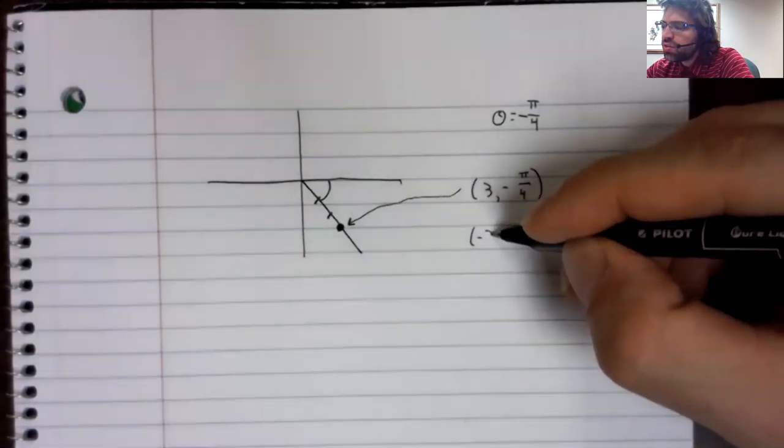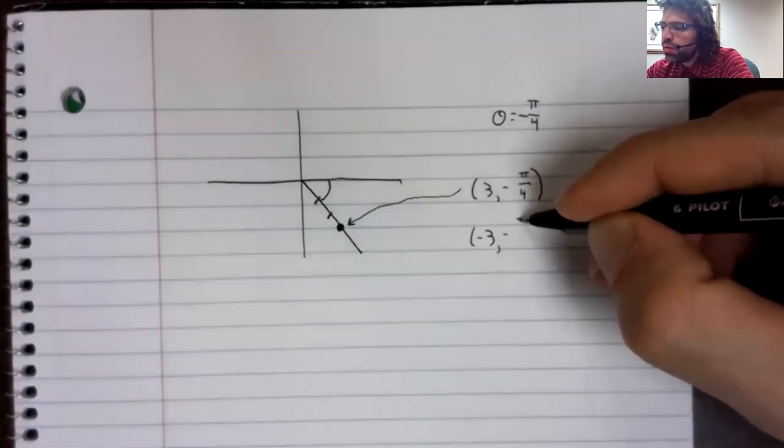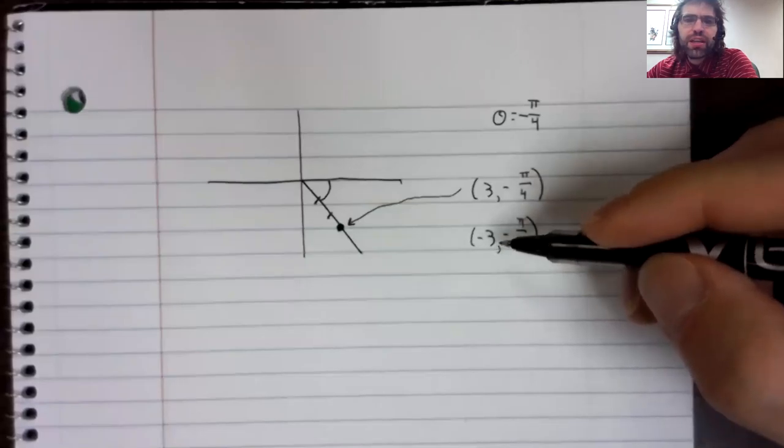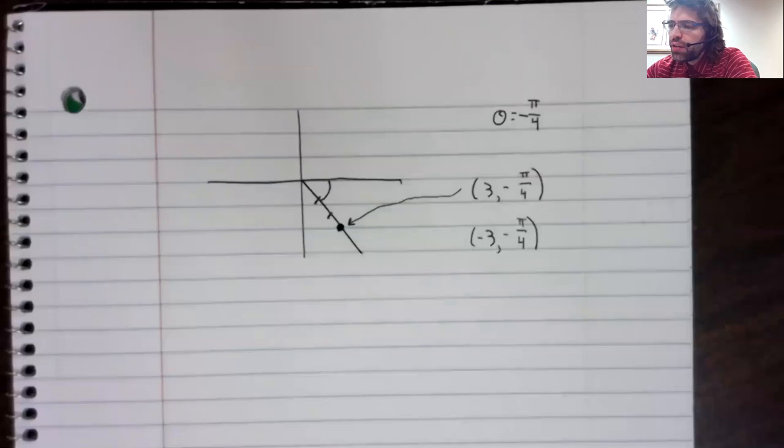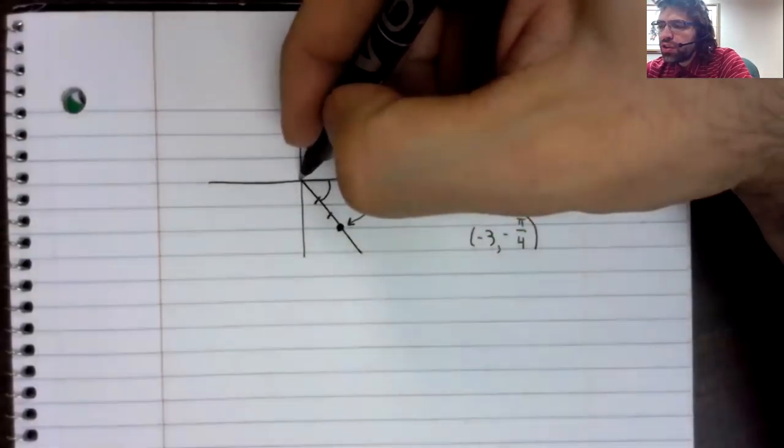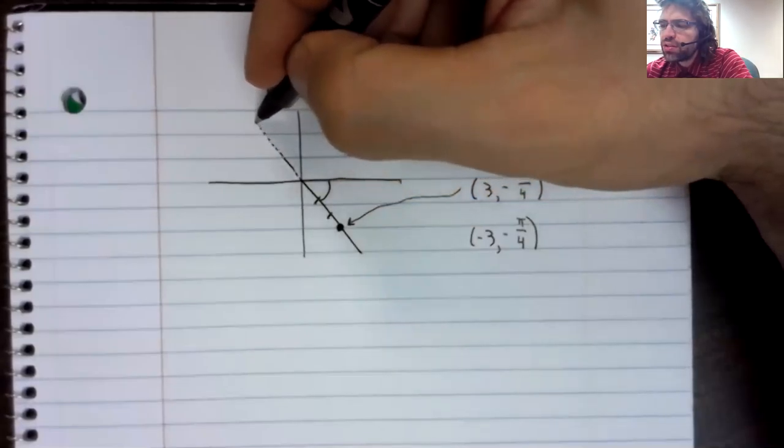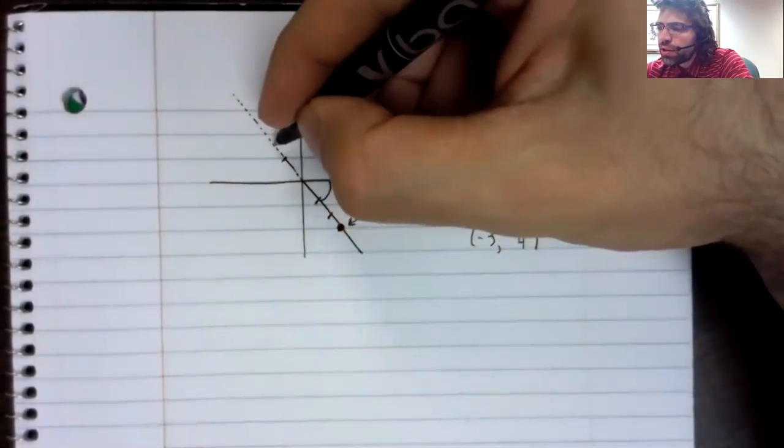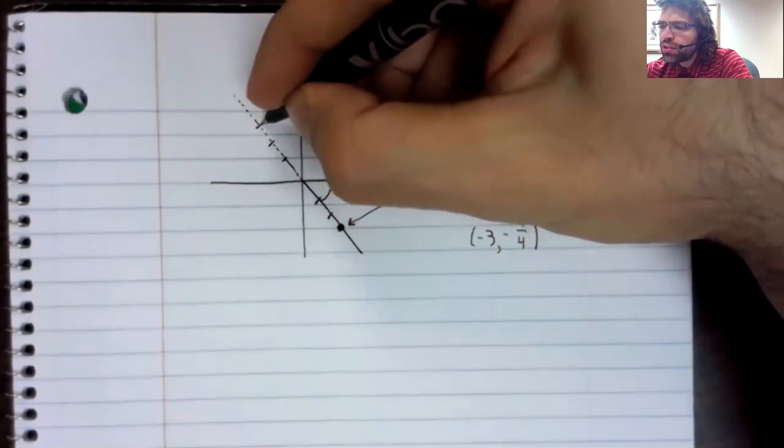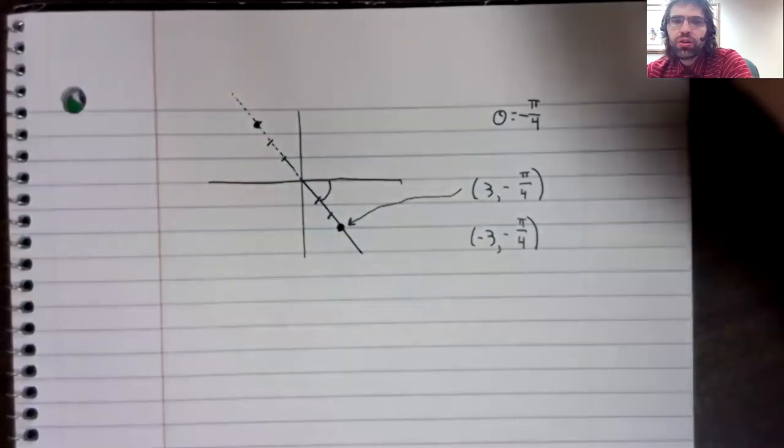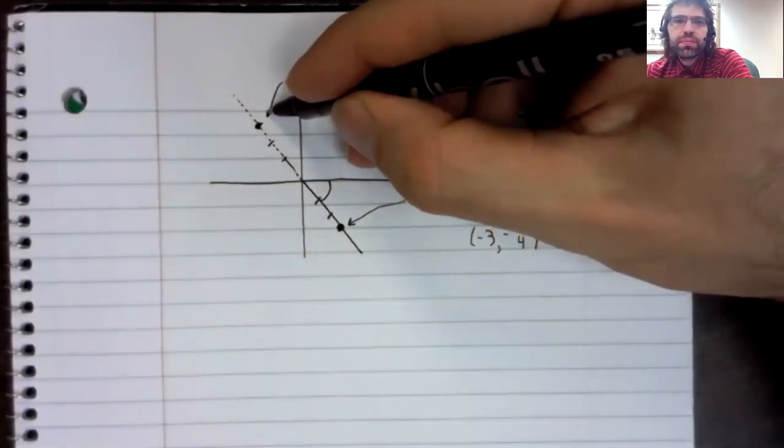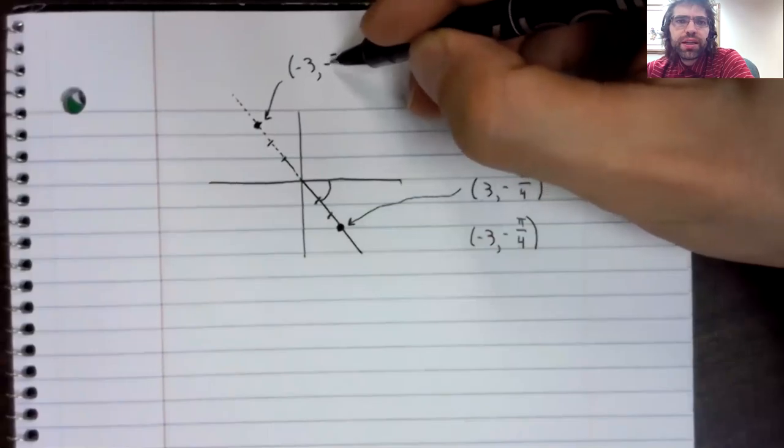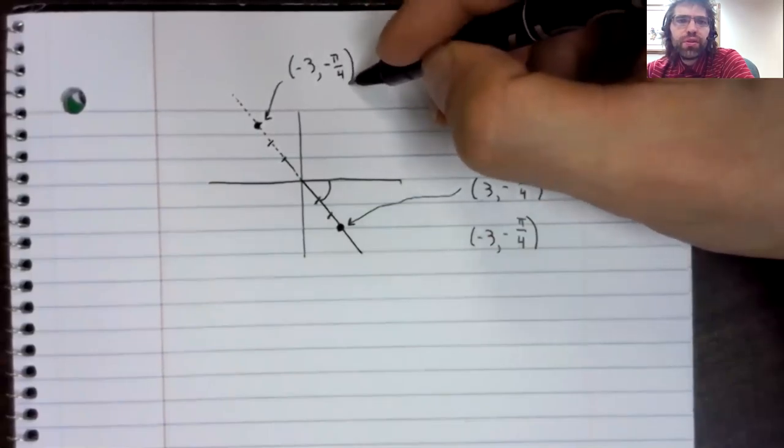Let's use this same example to see what happens if you have a negative radius. If you have a negative radius, then you extend this line segment in the other direction. And you count r units in that other direction. So here is negative 3, negative pi over 4.